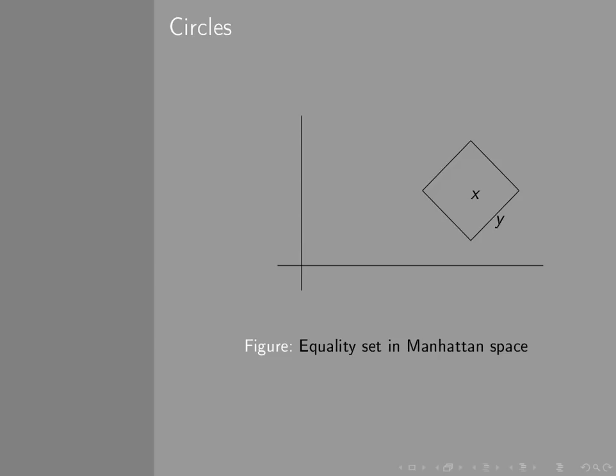A circle in Euclidean space is made up of all points which are equidistant under the Euclidean metric from its centre X here. So a circle is an equality set of points that are rendered equal under this metric. Now, there's an equality set in Manhattan space, except it has an unexpected shape. It's a diamond.